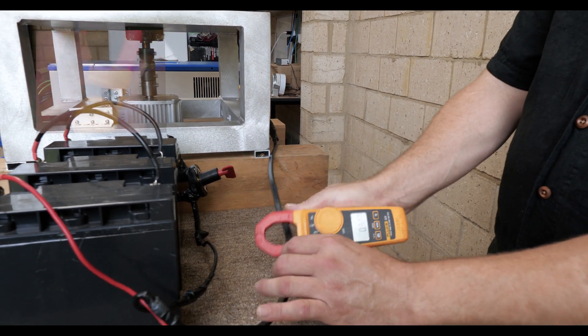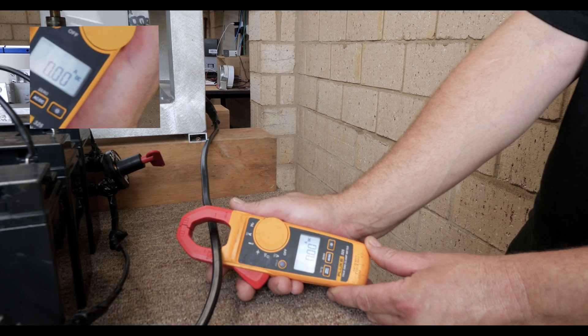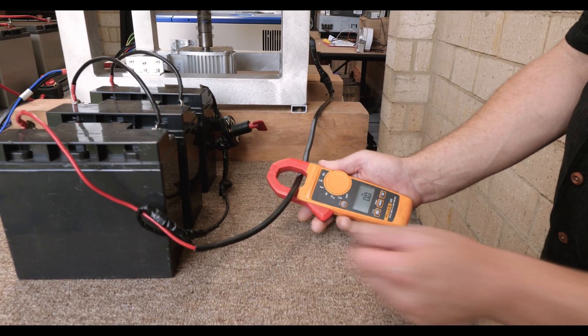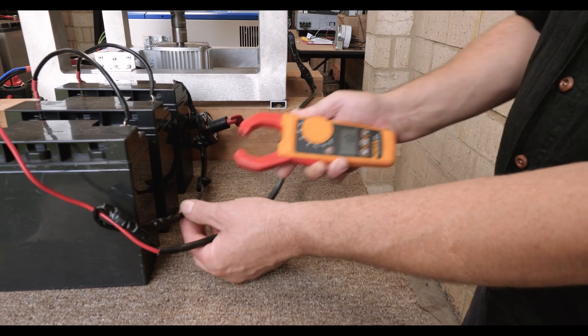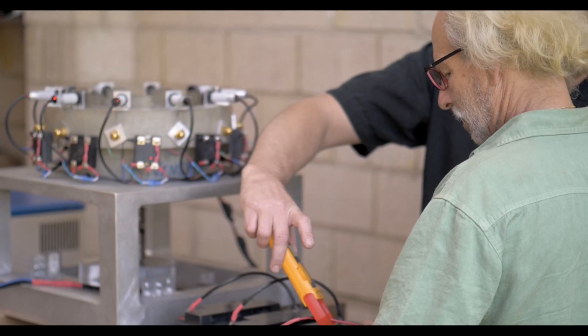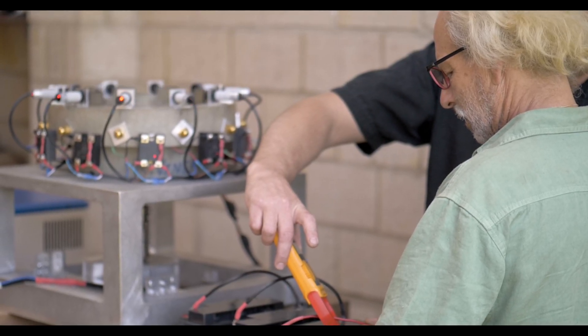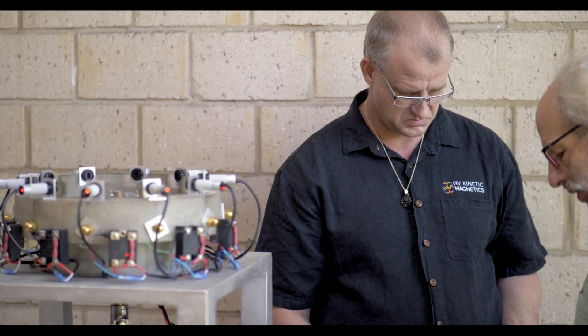This is the exciting part. When Ricky connects the amp meter to both positive and negative at the same time, the difference in the input to output is a reading of zero amps. This is live proof that the F4 EPS loses no energy in the process of energy production. It has an energy factor of infinite.